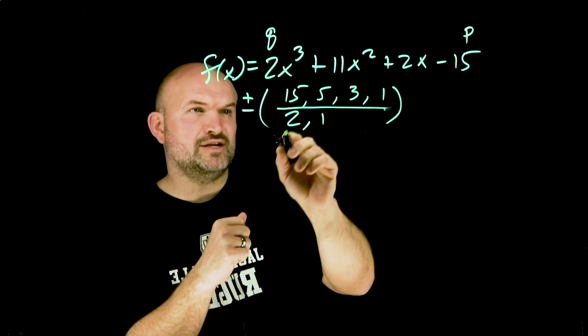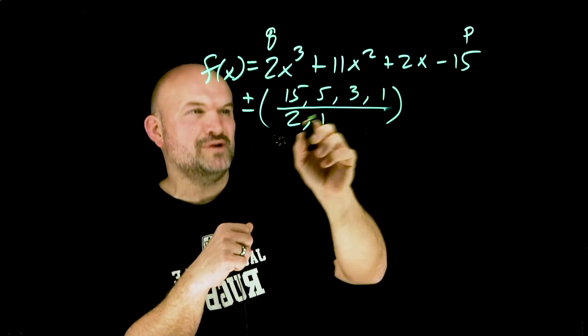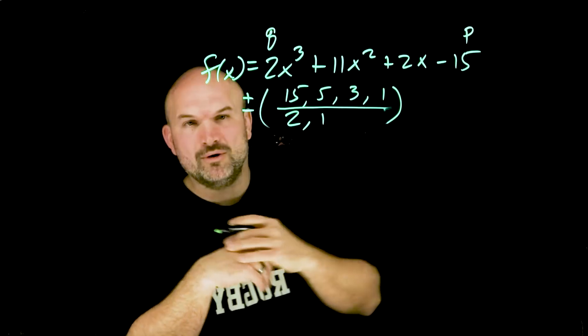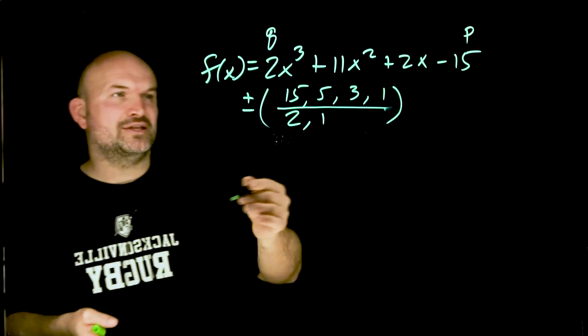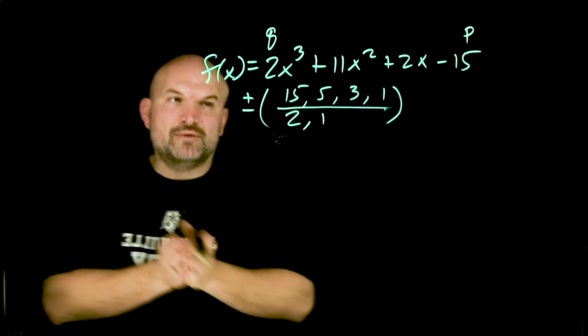Which one do we pick? You could do 15 over 2, 5 over 2, 3 over 2, 1 over 2, 15 over 1, 5 over 1, 3 over 1, 1 over 1, again plus or minus. There's a lot of possible rational zeros. What I always like to do is start with 1 and negative 1. I always check 1 then go to negative 1 then I'd probably go to 3 and then negative 3. I always start with the smallest and then work my way up.